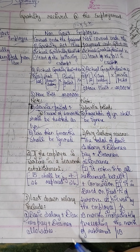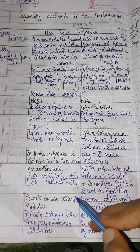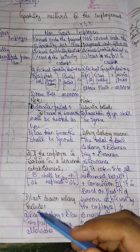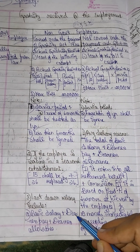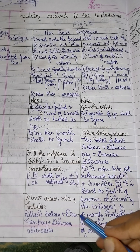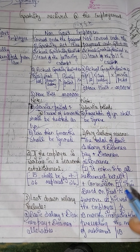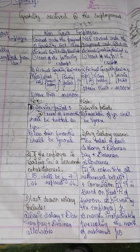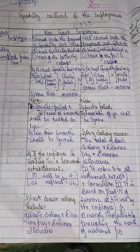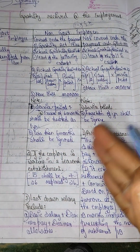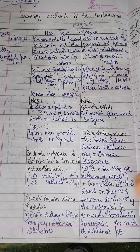The third point is the definition of last drawn salary. Salary includes: first, basic salary; second, DA (Dearness Allowance) forming part of pay. This applies to gratuity covered under the Payment of Gratuity Act 1972.